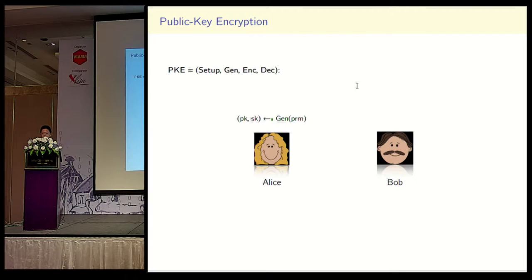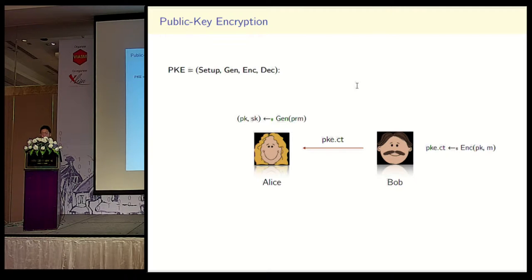Let us briefly review public key encryption. Alice will generate a pair of public key and secret key. Given the public key, Bob will encrypt the message M and send the resulting ciphertext to Alice, and Alice can decrypt the ciphertext with her secret key.